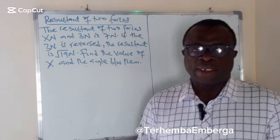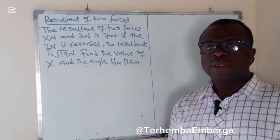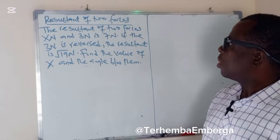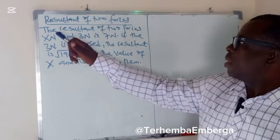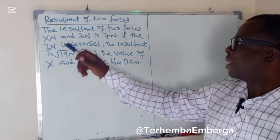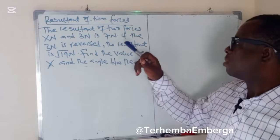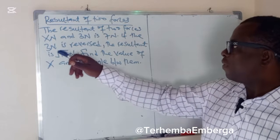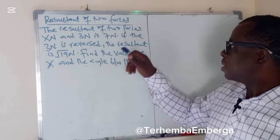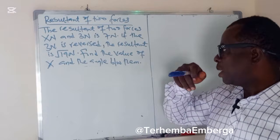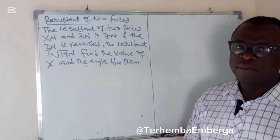Today we'll be looking at the resultant of two forces. The problem is: the resultant of two forces, x Newton and 3 Newton, is 7 Newton. If 3 Newton is reversed, the resultant is the square root of 19 Newton. Find the value of x and the angle between them.